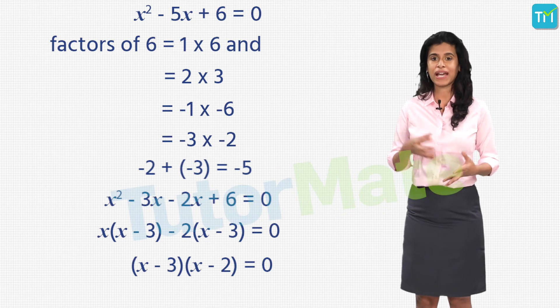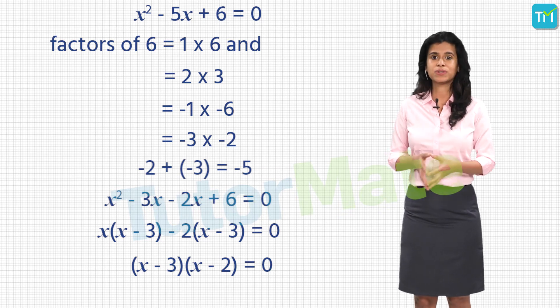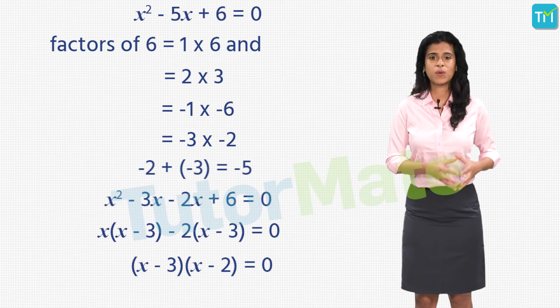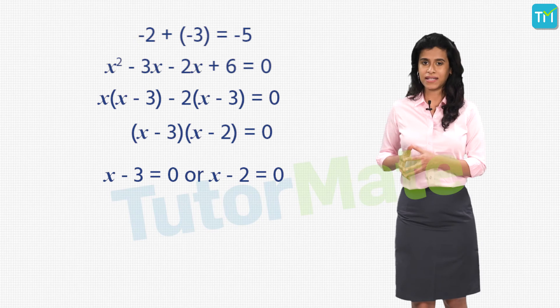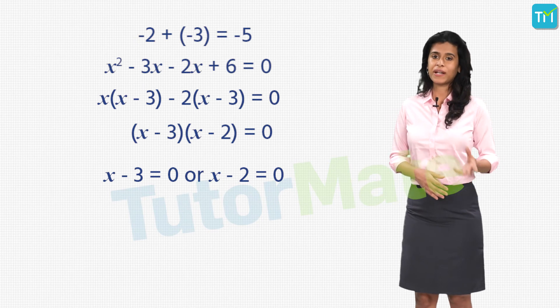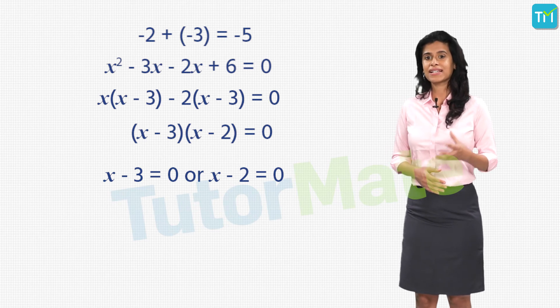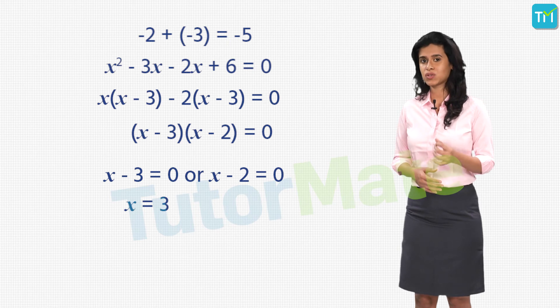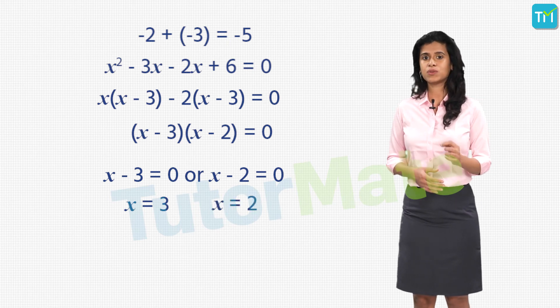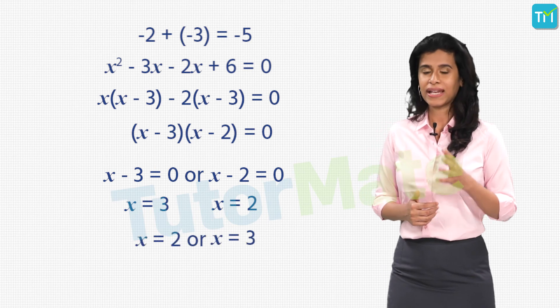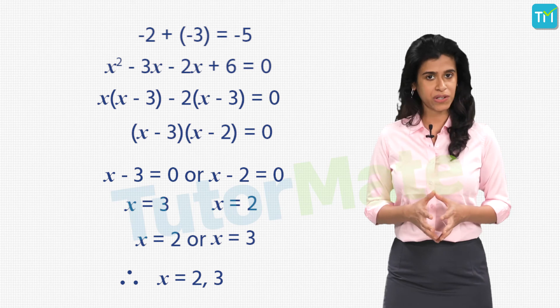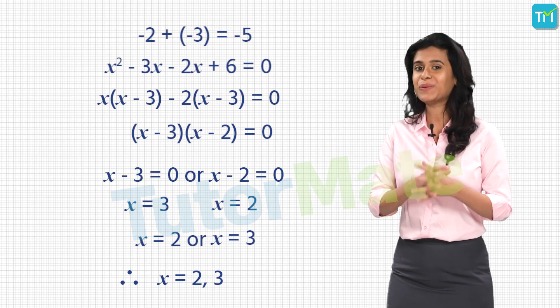Since the RHS is 0, we equate the two factors, x minus 3 and x minus 2, to 0. When we equate x minus 3 to 0 we get x equal to 3, and when we equate x minus 2 to 0 we get x equal to 2. We know that x equal to 2 and x equal to 3 are both roots of the equation. Therefore, we have solved the quadratic equation by equating the factors to 0. Here is the deal with factorization — it requires you to manipulate the terms to get common factors throughout the polynomial, and that only comes with practice.